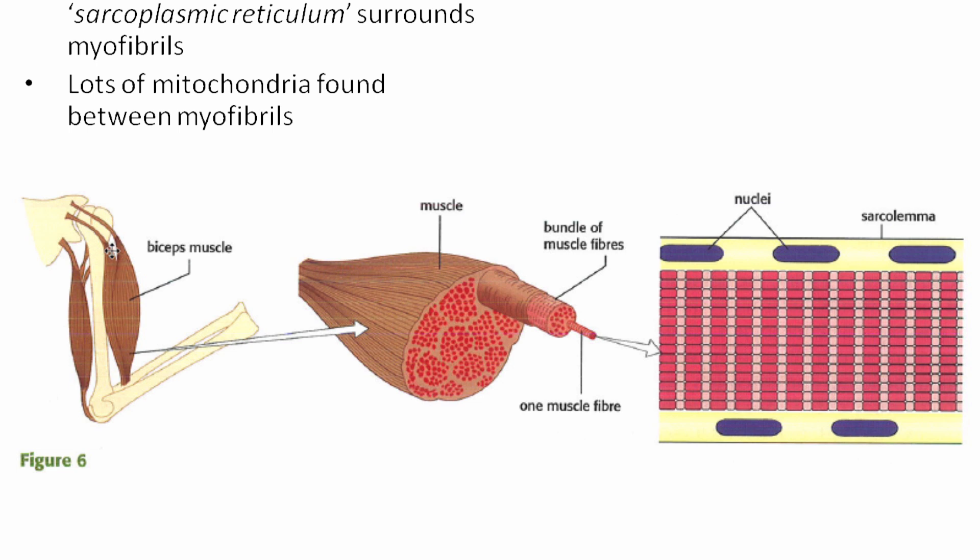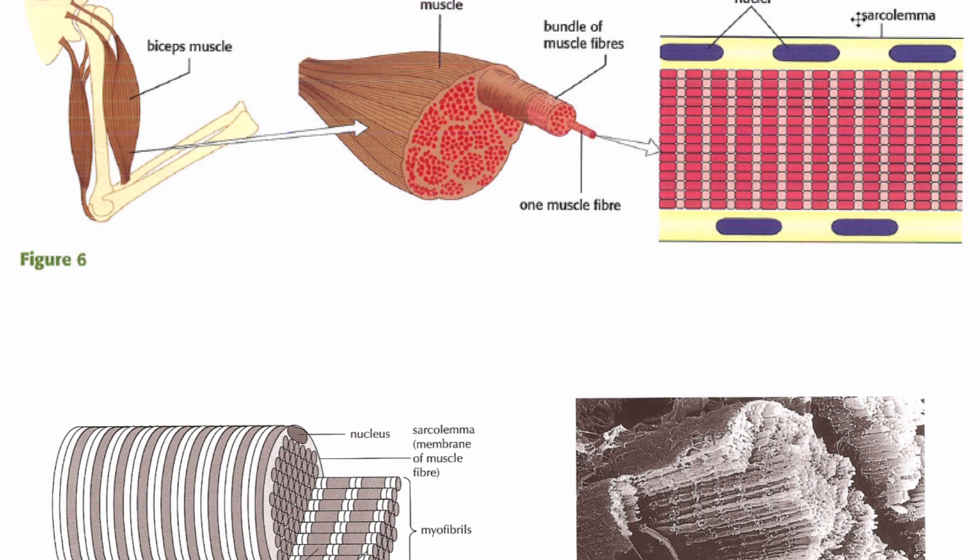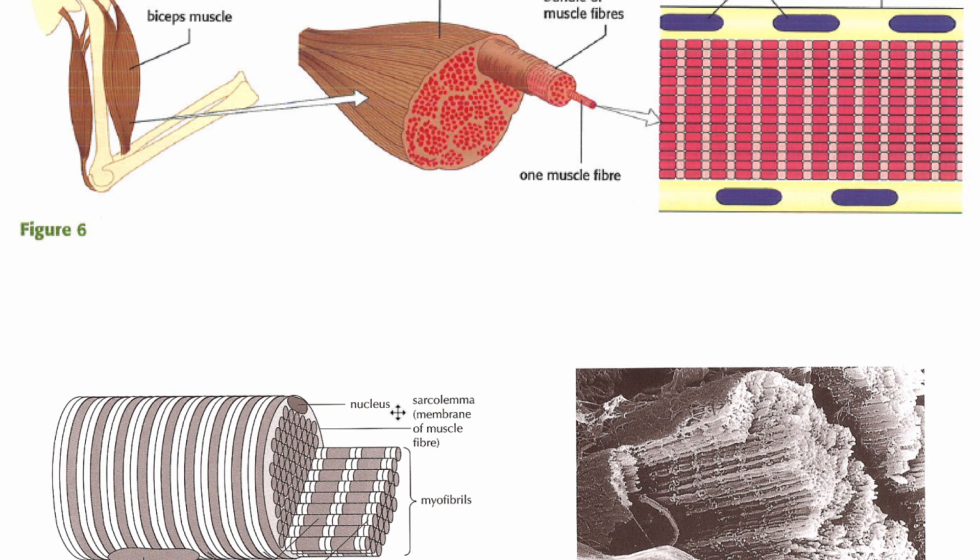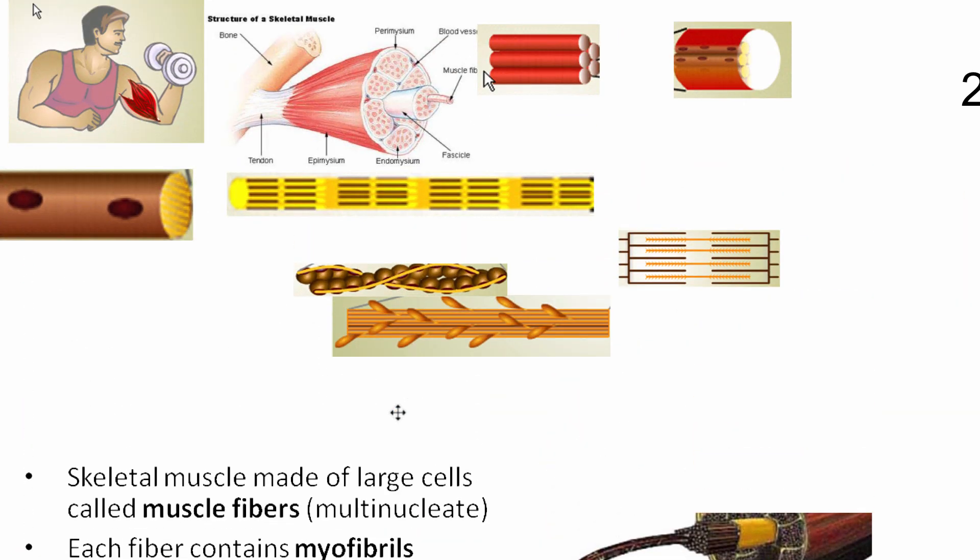So take a look again. Biceps. What's the antagonistic muscle to the biceps? It would be the triceps back here. If you break it all down and cut out all these pieces, you can see bundles of muscle fibers. And then each of these muscle fibers contains a lot of nuclei, basically. And the sarcoplasmic reticulum is going to be releasing the calcium to help give the instructions to tell these particular muscles to contract.